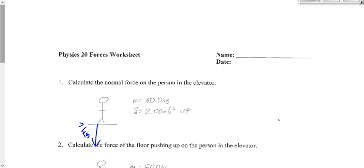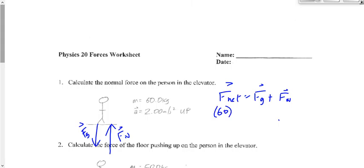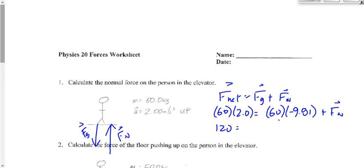He's accelerating up — not just because he's moving up, but because he's accelerating upwards. The upward force must be bigger, and the normal force is the upward force. So F net equals the sum of the forces, Fg plus Fn. F net is M times A, which is 60 times 2. Fg is 60 times negative 9.81. We solve for Fn: 60 times 2 is 120; 60 times 9.81 is negative 588.6. Taking 588.6 to the other side by adding, we end up getting 709 newtons.